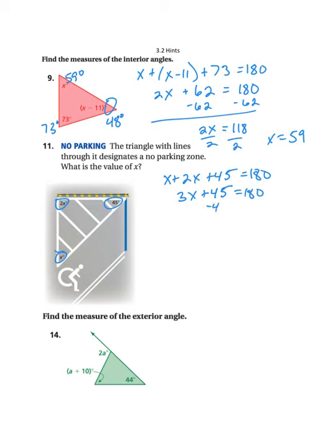We'll subtract 45 from both sides, and we get 3x equals 135. We'll divide both sides by 3, and we get x equals 45. This time we're just asked to find the value of x, so that can be our final answer.